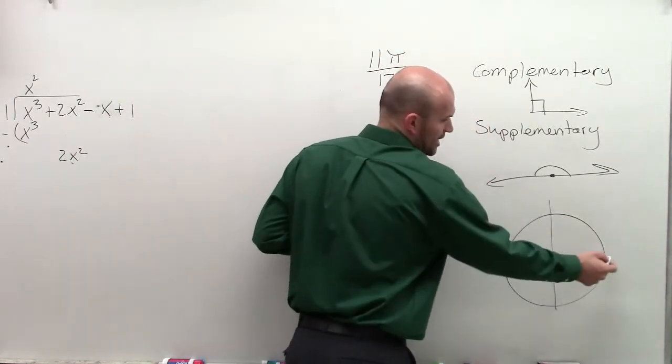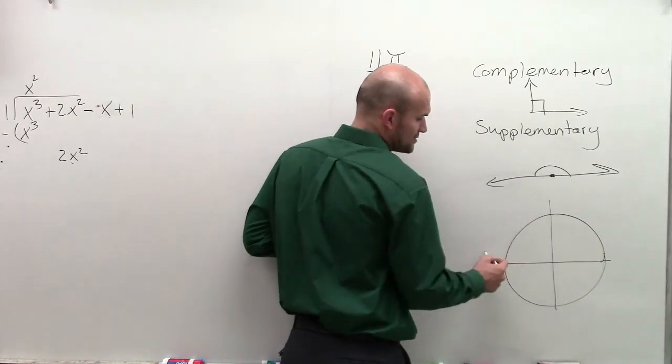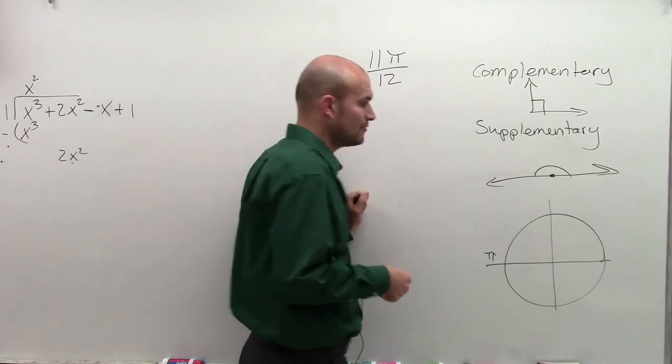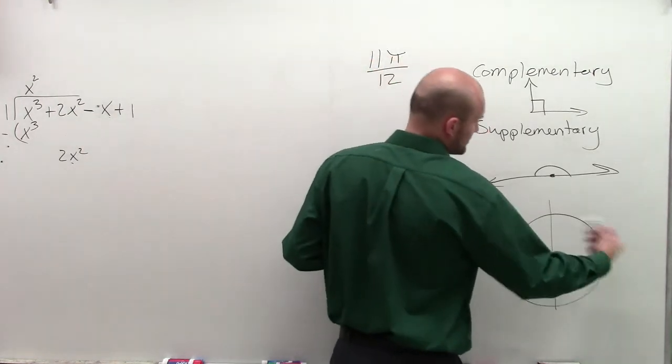And if we remember, we start at our initial side. To go halfway around our circle, we denote it as pi because it's pi radians around. And all the way around was 2 pi.